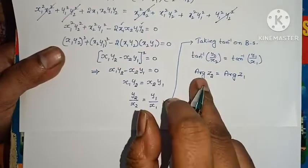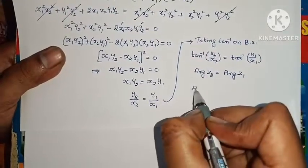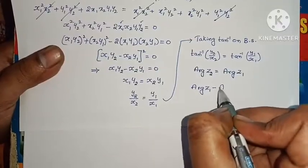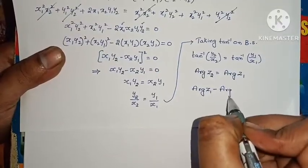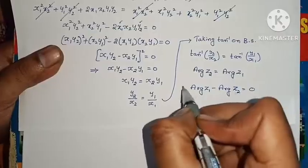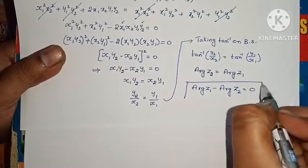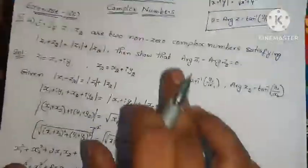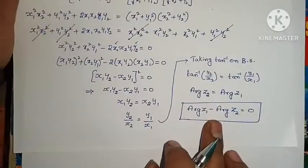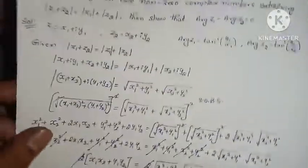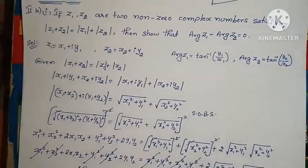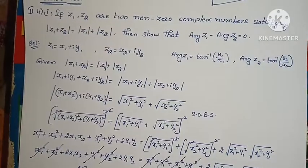So arg Z1 minus arg Z2 equals 0. This is proved. We were asked to show that arg Z1 minus arg Z2 equals 0, and the solution is very simple and easy.